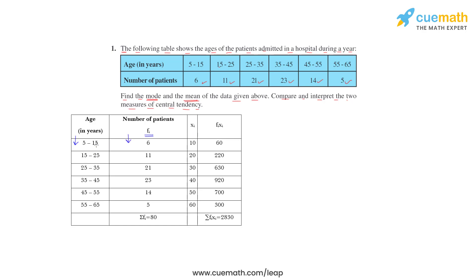Xi is upper limit plus lower limit divided by 2. So 15 plus 5 divided by 2, it is 10. 25 plus 15 divided by 2, 20. 5 plus 25 divided by 2, 30. Then 40, 50, 60.